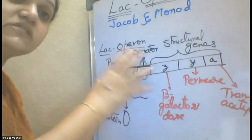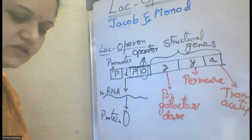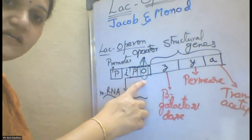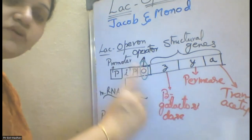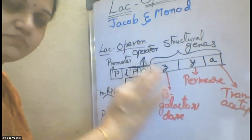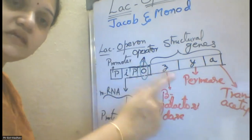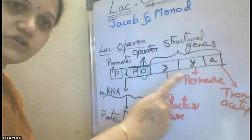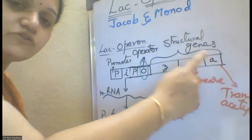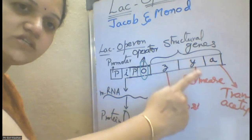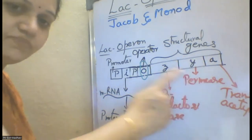The lac operon is in off mode because the repressor protein binds on the operator gene. In this, three structural genes are present: Z, Y, and A. Among these three structural genes, Z is bigger than Y, and Y is bigger than A — the smallest structural gene is the A gene.